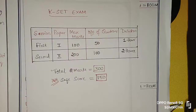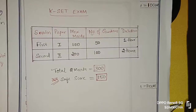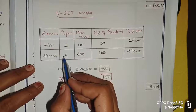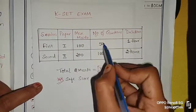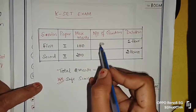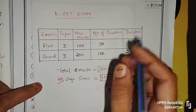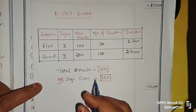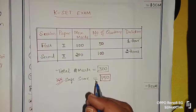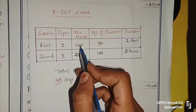Hello dear students. The KSET exam is made by mathematics paper and analysis. In the KSET paper, there are 2 papers to attend - Paper 1 and Paper 2. Paper 1 has 50 questions, 1 hour time, each question has 2 marks, so 50 into 2 will be 100. So 100 marks is Paper 1.